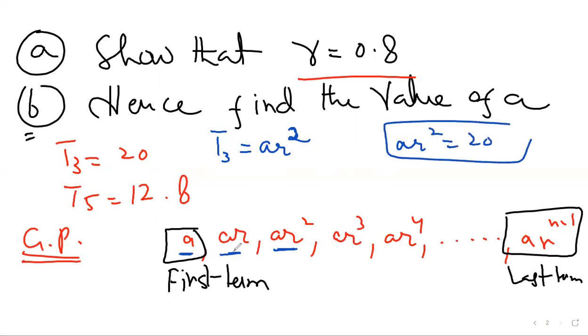And T5, counting one, two, three, four, five, is AR to the 4th, which equals 12.8.